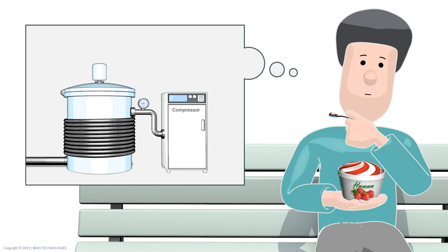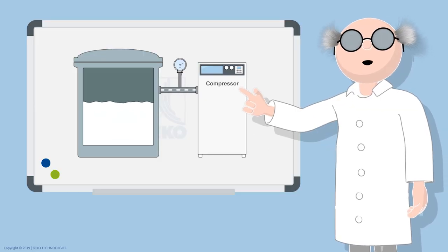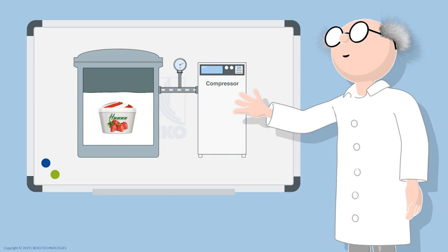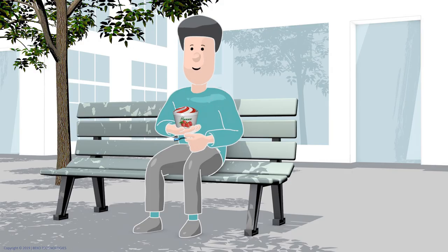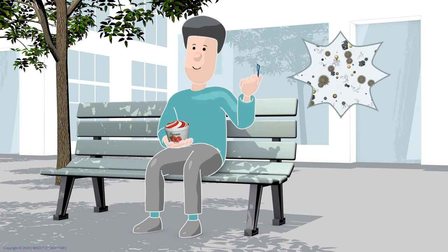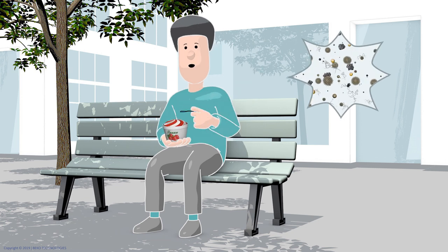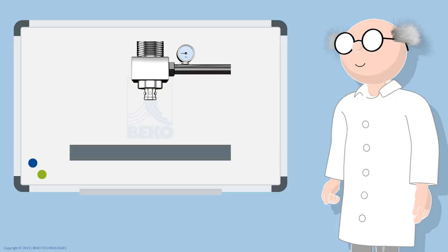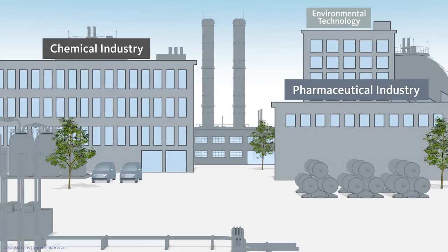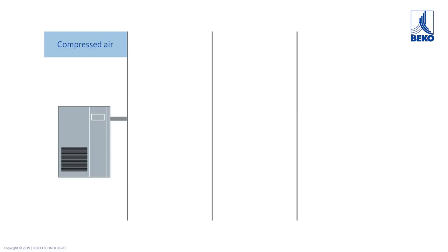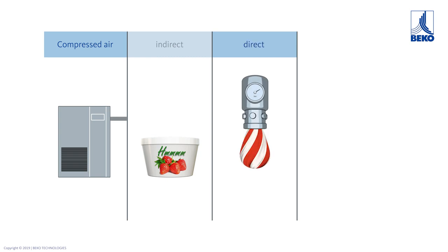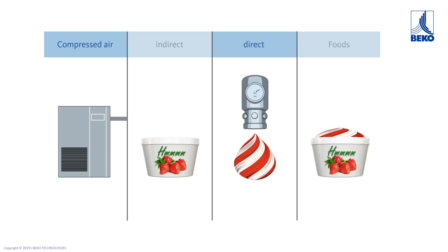Why compressed air? Peter asks himself — he hasn't thought about it yet. Compressed air is used because the air pockets increase the volume of the ice cream and make it creamier. But isn't normal air filthy and does it contaminate the ice cream with unwanted or even hazardous substances? No need to worry, dear Peter — compressed air is needed in almost every production process.